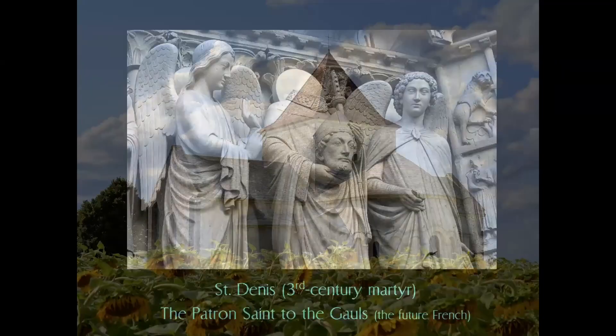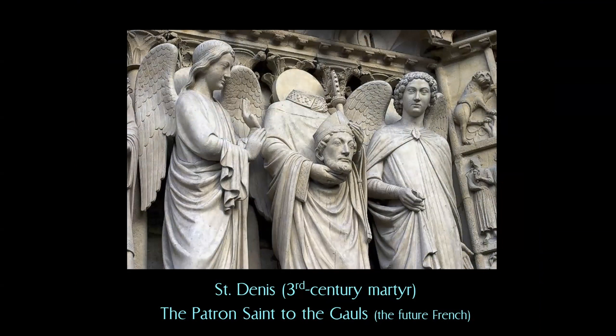That takes us to the story of the origins of gothic architecture, which has a very particular moment in history when it is triggered. We go about 20 miles north of Paris to a little abbey church devoted to Saint Denis — or Saint Denis in French. Every major cathedral is going to have a statue of this guy holding his severed head in his hands. Saint Denis, the patron saint of the French, was a third-century Roman Christian who decided to become a missionary and bring Christianity to the Gauls.